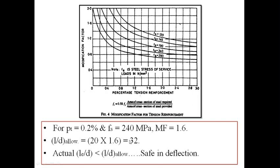When I multiply 20 into 1.3, the answer is 26. So here the slab is not safe in deflection, because the actual L/d is 30, and since the modification factor has decreased, it is showing a failure in deflection.